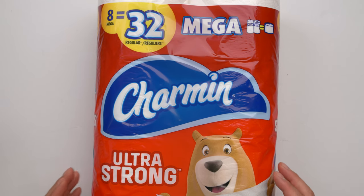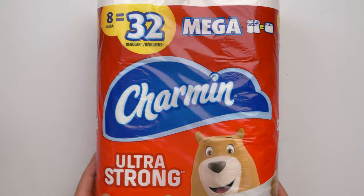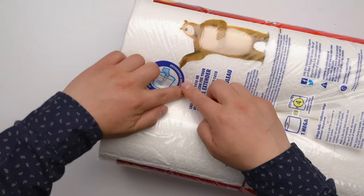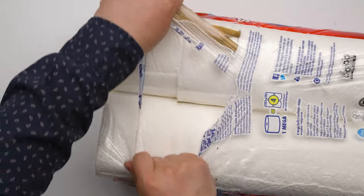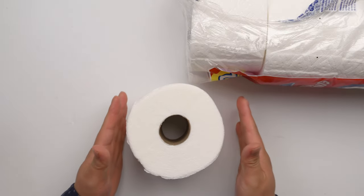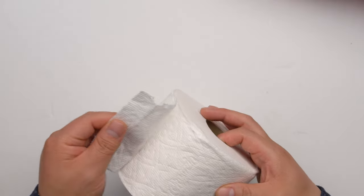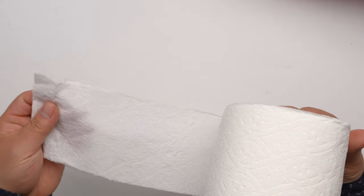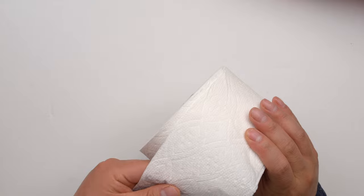So this is Charmin Ultra Strong toilet paper and let's open it. This roll is bigger. The first feeling is that it's super thick.